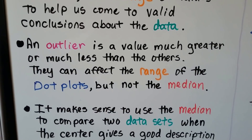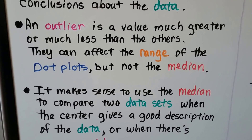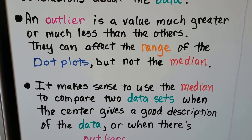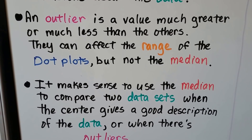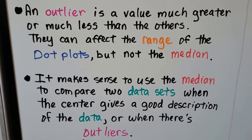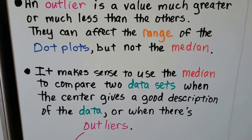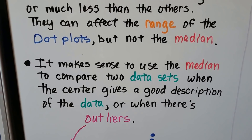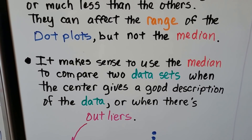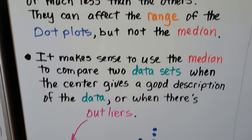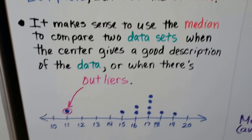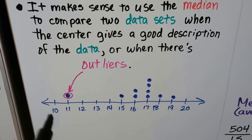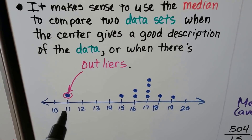An outlier is a value much greater or much less than the others. They can affect the range of the dot plots but not the median. It makes sense to use the median to compare two data sets when the center gives a good description of the data or when there are outliers.